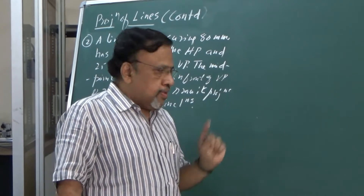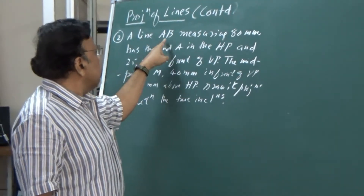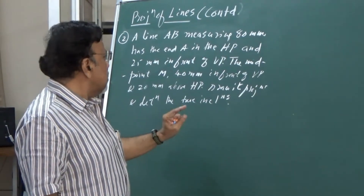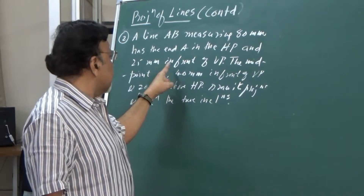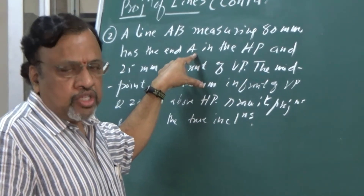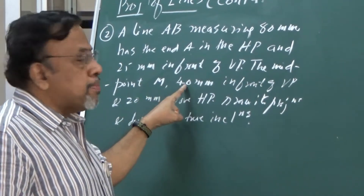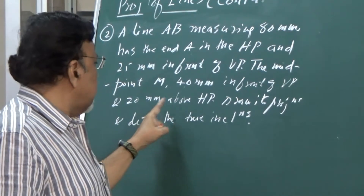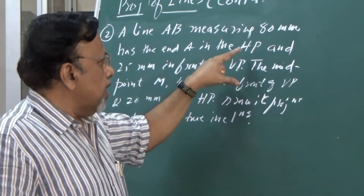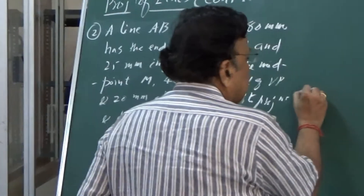We have a line EV with length given as 80mm (dm). NDA is in the HP, 25mm from VP. The location of NDA is given with respect to top and front view. The midpoint M is 40mm in front of VP and 20mm above HP. That is the location of the midpoint, and one of the ends A is given. We need to do the projections.